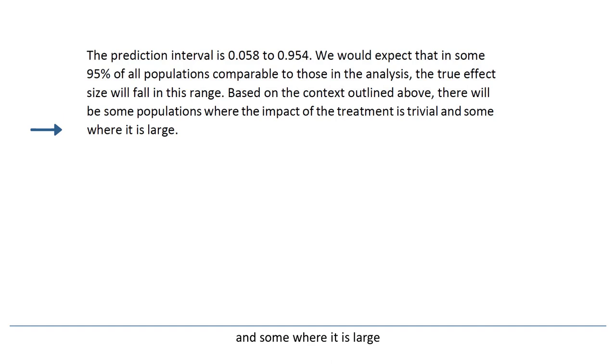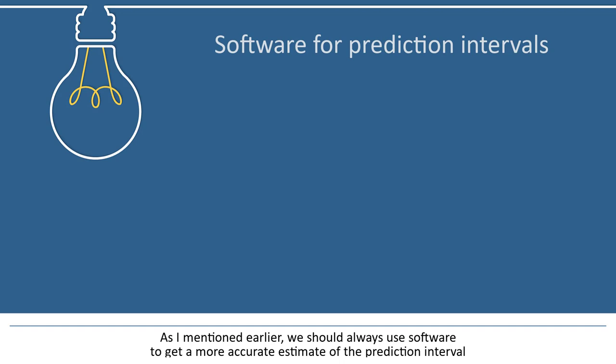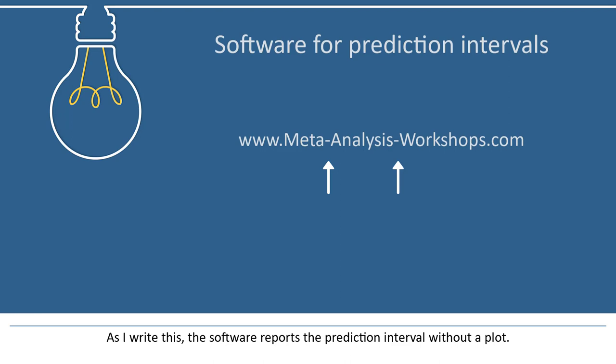So, that's the way I would summarize the results of this analysis. As I mentioned earlier, we should always use software to get a more accurate estimate of the prediction interval. This software can be downloaded at www.meta-analysis-workshops.com. As I write this, the software reports the prediction interval without a plot, but that will be updated soon to the version I'm going to show here. We need to enter four values into this program.